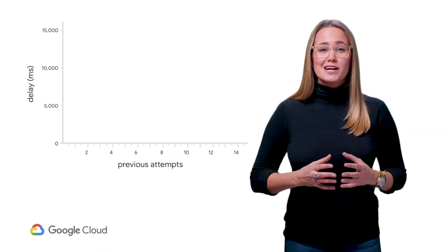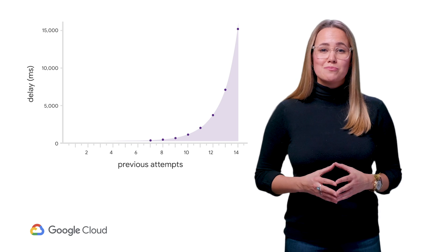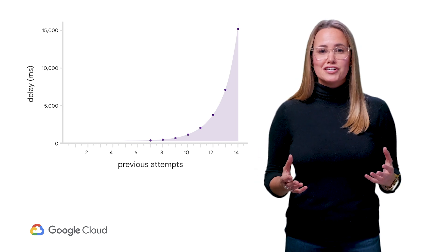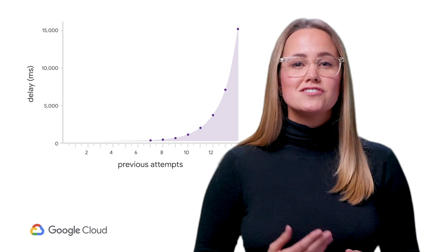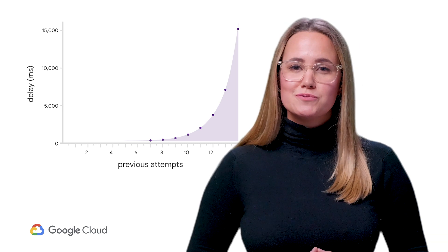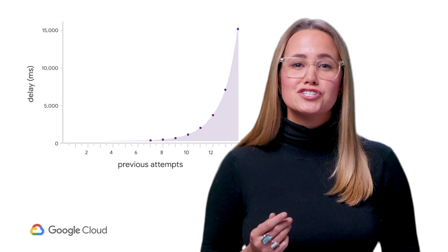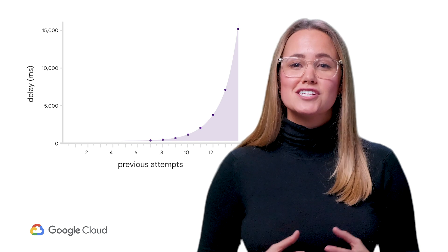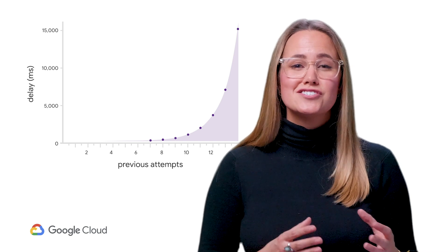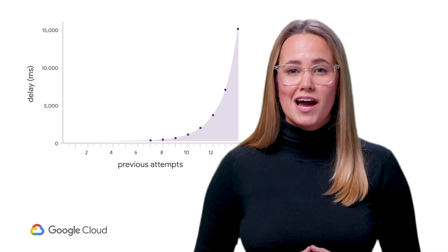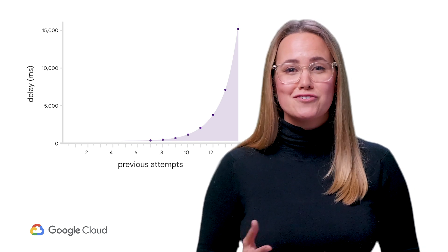When handling an actual error, we also recommend doing exponential backoff for any retries. There's another link in the description for this, but the basic idea is to ensure you design your system in a way that doesn't just spam the API with requests after a failure.